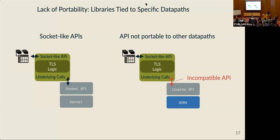On the portability side, library implementations use a specific underlying data path because that's where they make the underlying calls. If you want to run this application on a new data path — for example, switching from the kernel networking stack to RDMA via the ibverbs API — there's an incompatibility. The library implementation is built to work with sockets instead of ibverbs calls. And using ibverbs isn't just an API change, it's a change in the programming model, since calls are non-blocking. Changing the library requires knowledge of the library's internals that we don't want to require of the application developer.